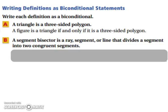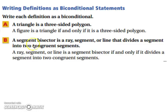A segment bisector is a ray, segment, or line that divides a segment into two congruent segments. This can be written as: a ray, segment, or line is a segment bisector if and only if it divides a segment into two congruent segments. Split the sentence into two pieces — just like writing a conditional — but use 'if and only if' instead of 'if-then.'